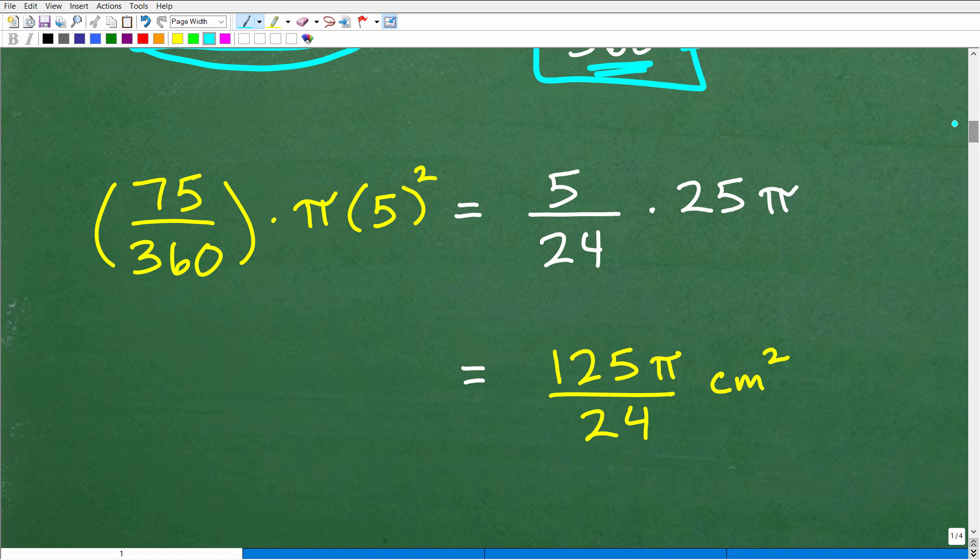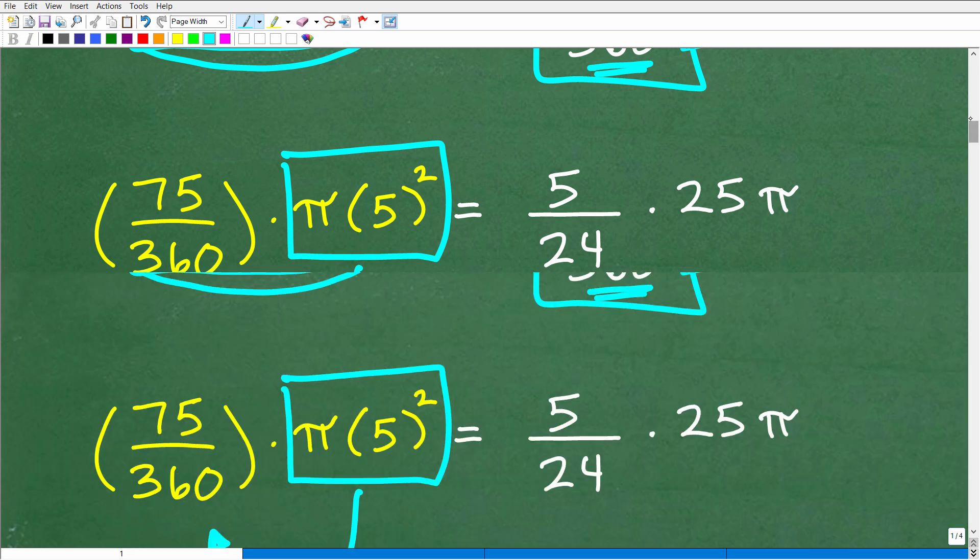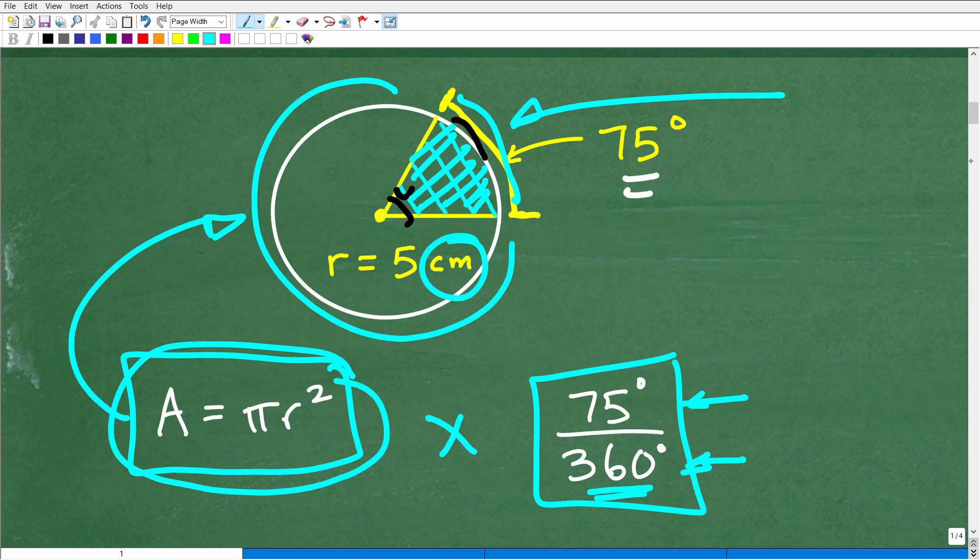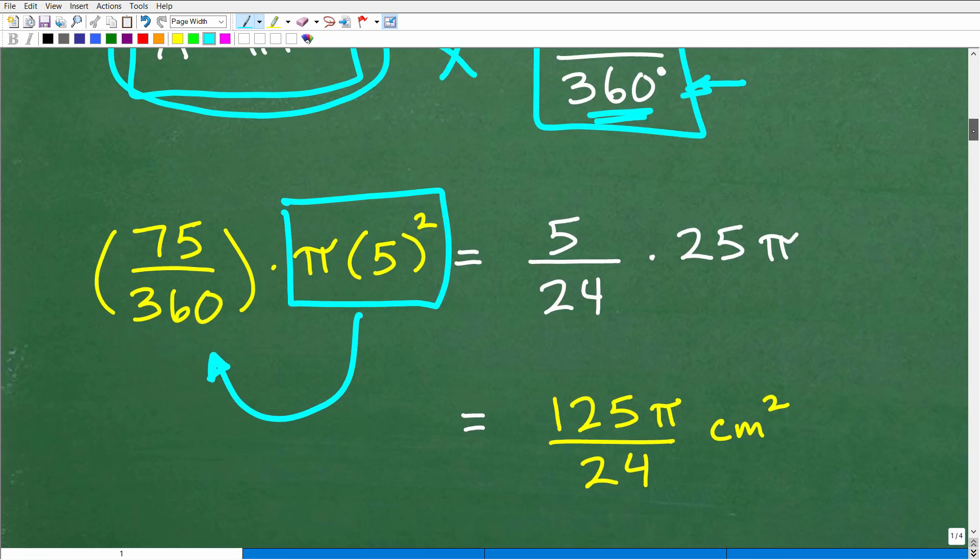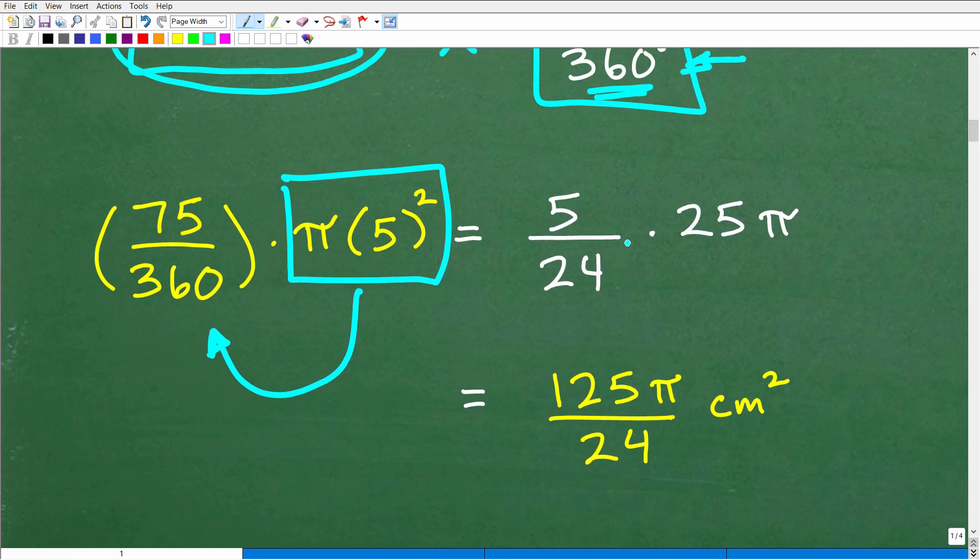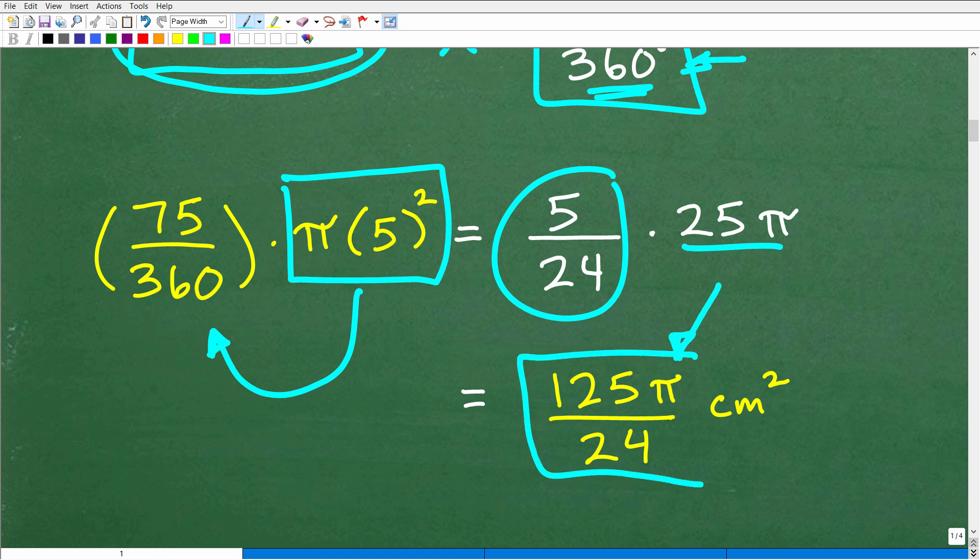So we just go ahead and do the actual math. So here is finding the area of this particular circle. So it's π, the radius is 5 centimeters, we just put 5 here. So 5 squared, that's radius squared. So we'll multiply it by 75 over 360. Now, we know in advance we're dealing with centimeters, so we're going to end up with centimeters squared as our final answer. So this is going to be 5 over 24 times 25π. And when we do that, we can just actually leave our answer like this, 125π over 24 centimeters squared.